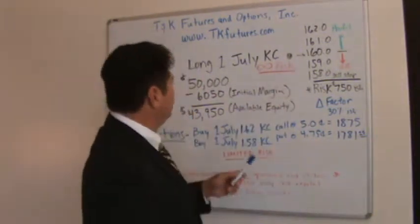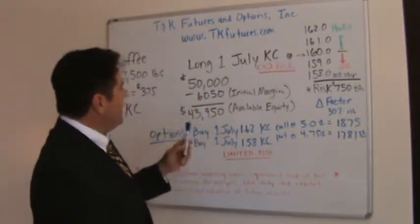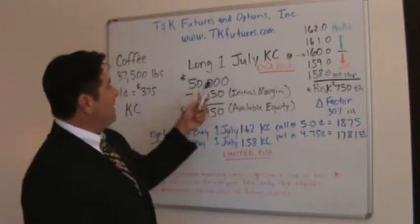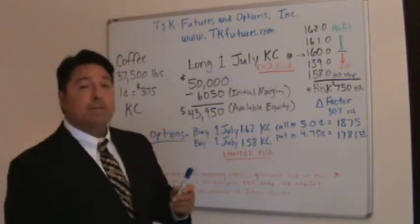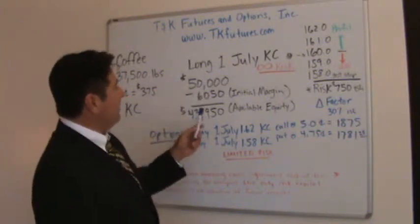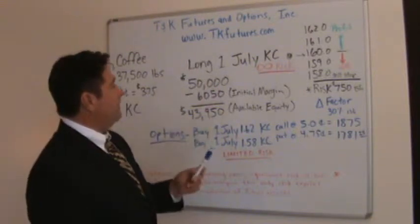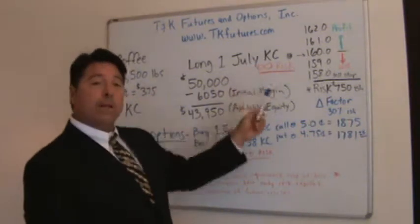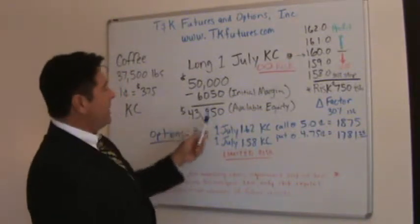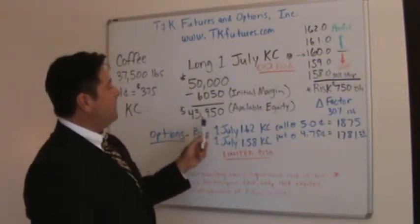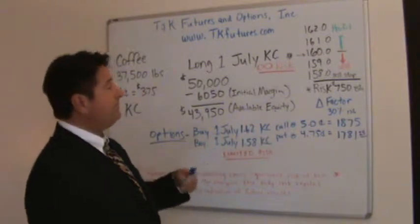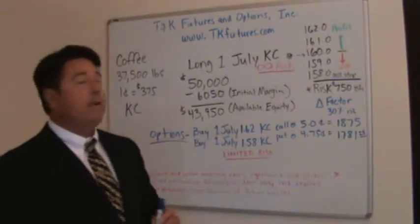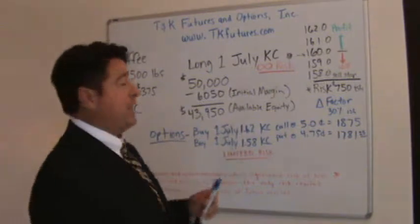Let's say you got long at 160. This number is not made up — I looked it up today — the initial margin for coffee is $6,050. So let's say you opened up an account with $50,000 and got long that one coffee position. That $6,050 goes on the side; it has to be in there even though the market hasn't moved against you. That leaves you with $43,950 of available equity to get another contract, some options, or whatever else you're looking to do.